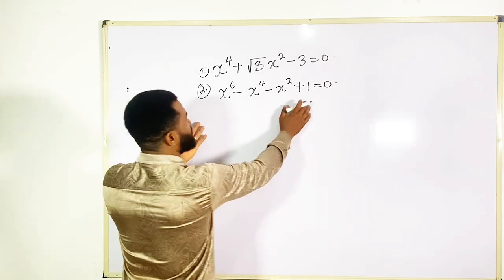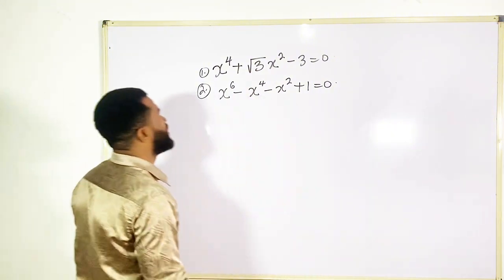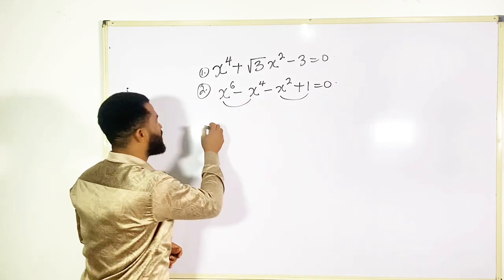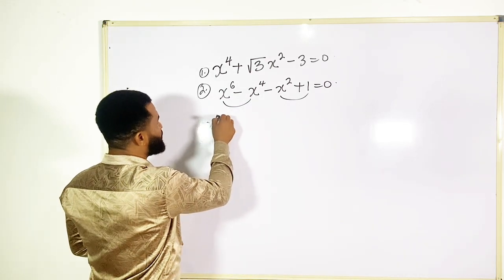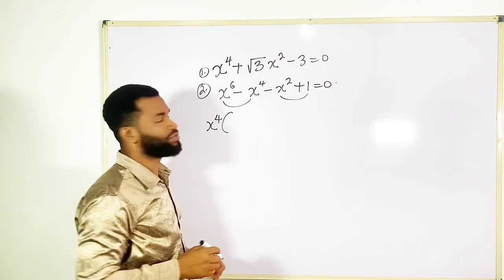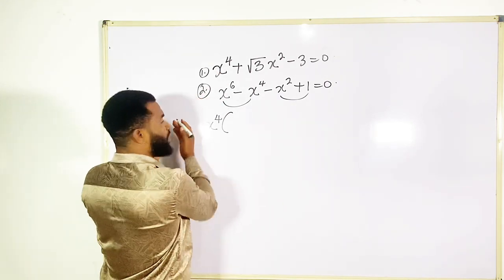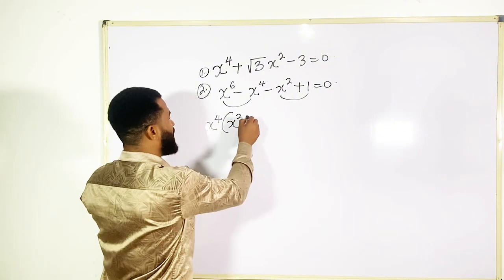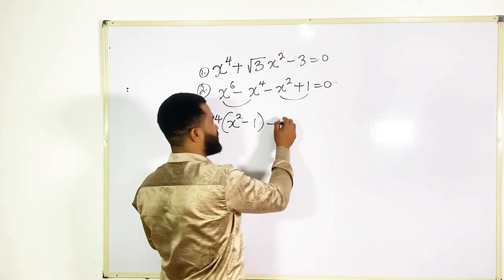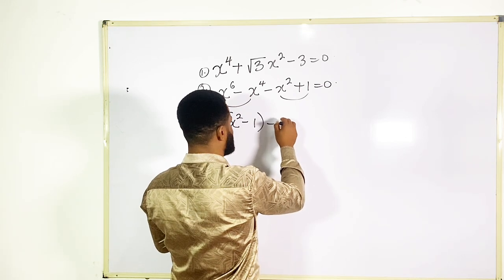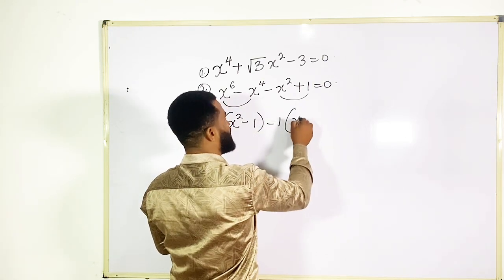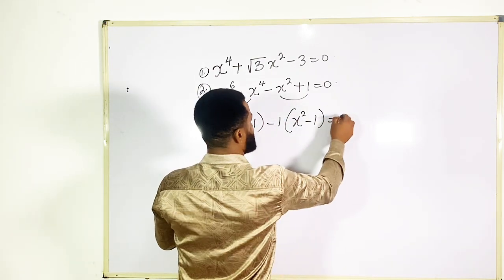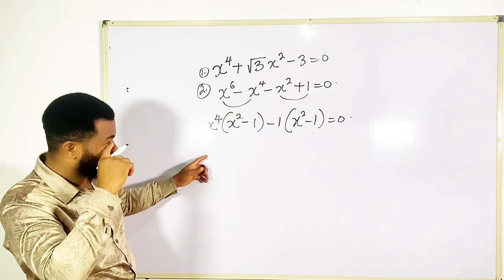I am going to group them two by two. Now factorize these two and also factorize these two. So I'm going to have x raised to the fourth power — out of the six I've taken four out, so that leaves two — giving x raised to power two minus one. This is going to be one over x raised to power two minus one, equal to zero. I am just factoring them.